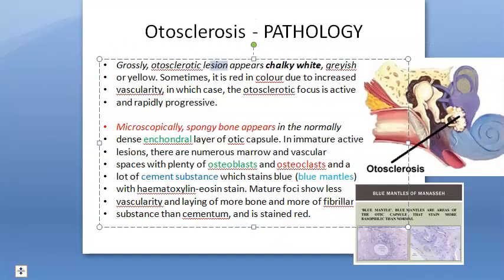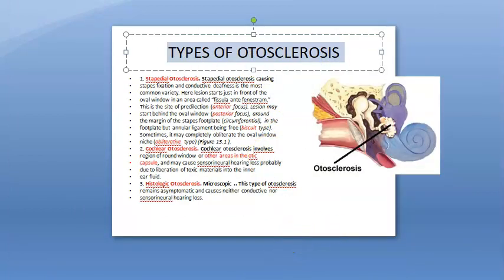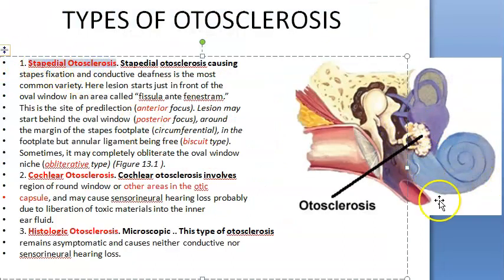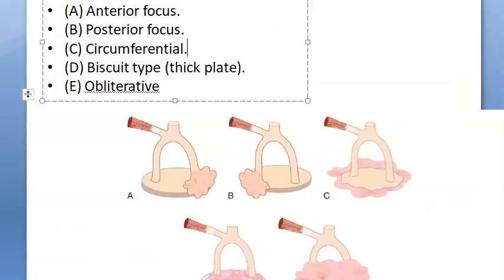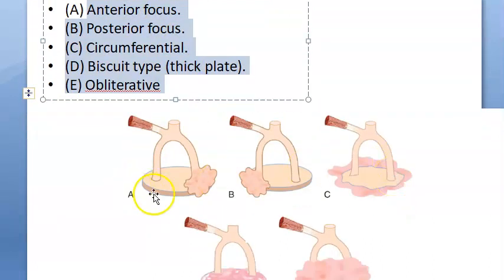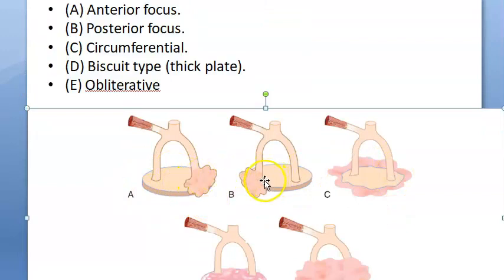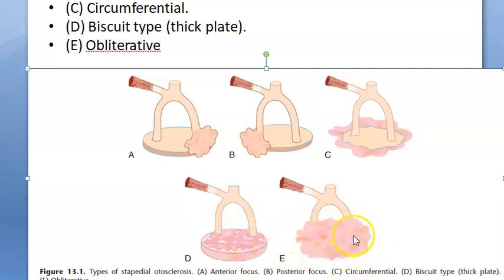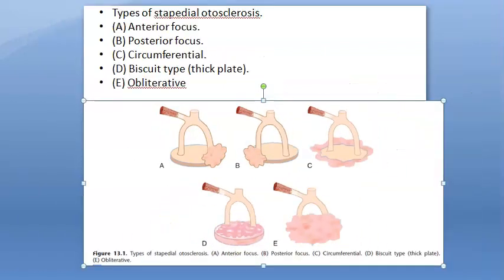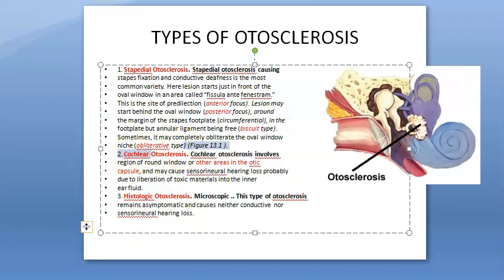Now let's look at types of otosclerosis. First is stapedial otosclerosis. Under this type, there are five subtypes based on location: anterior focus, posterior focus, circumferential, biscuit type (where the footplate is thickened but the annular ligament is free), and obliterative type (where there is complete obliteration of the oval window).